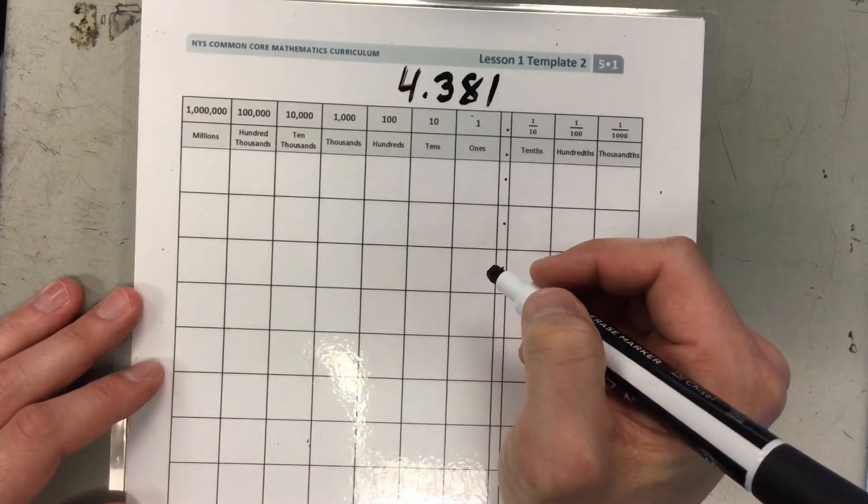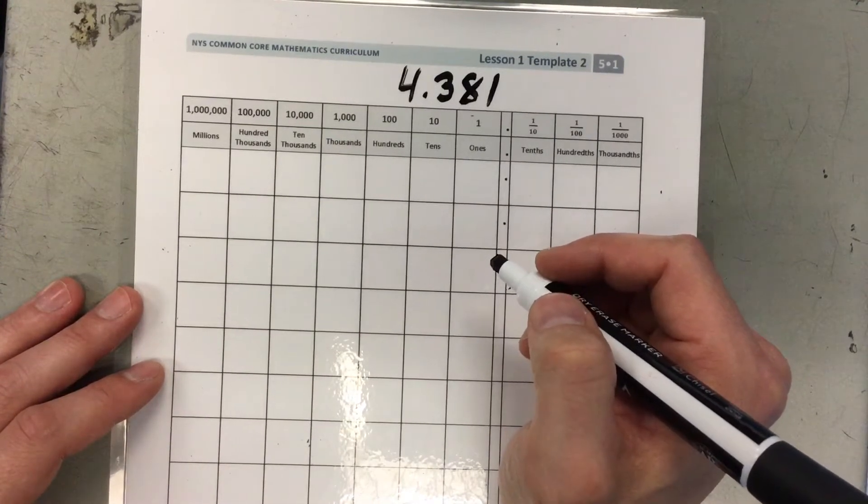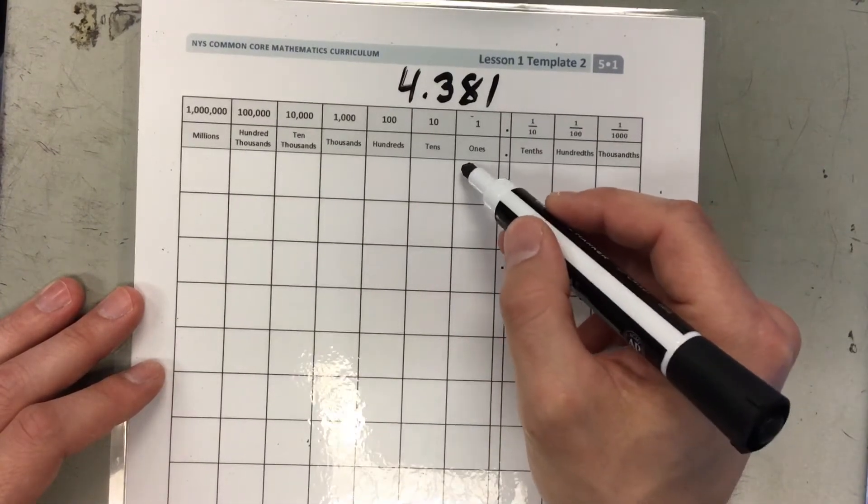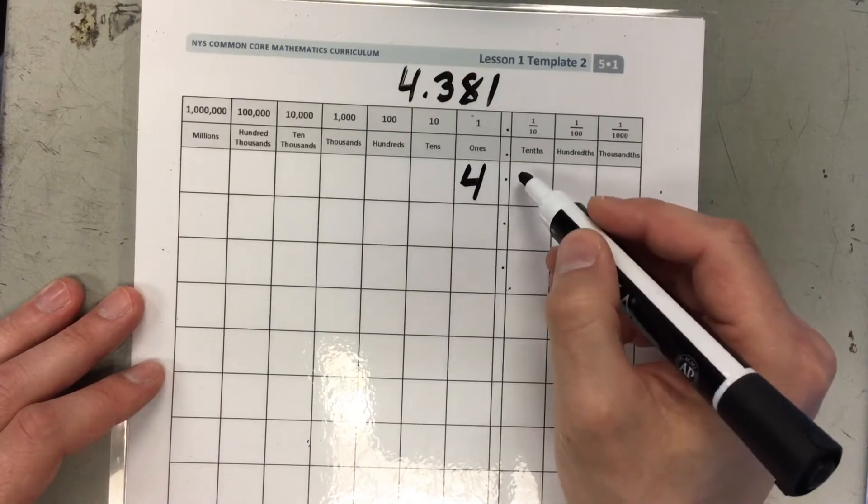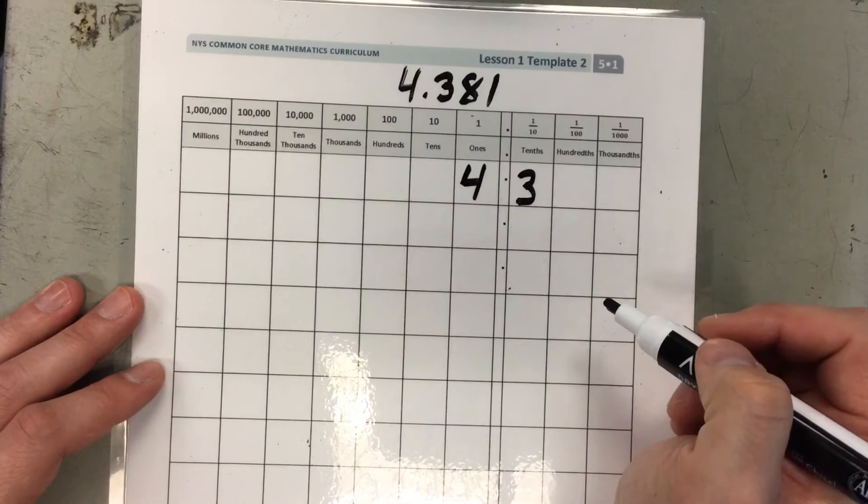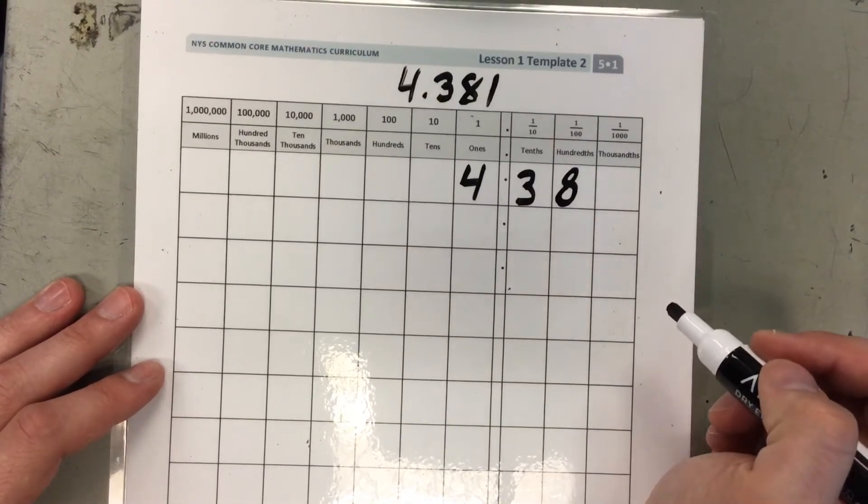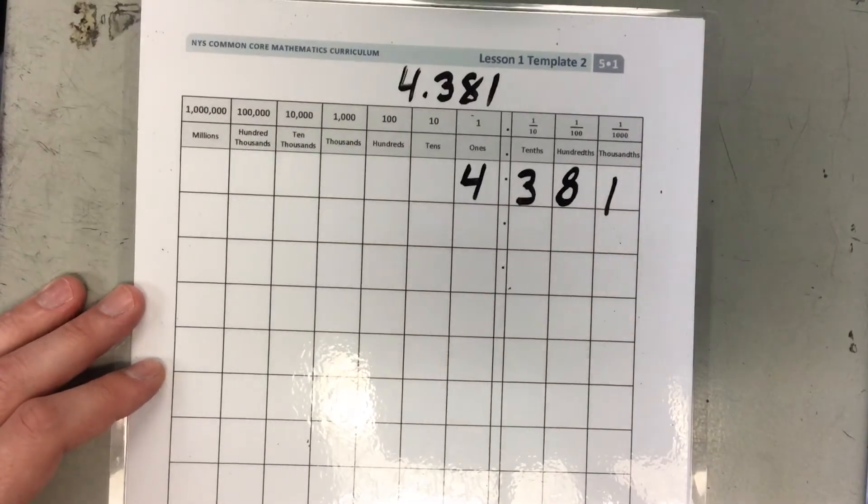Let's put this number into our place value chart and break it down and decompose it. So let's first name it in unit form. How many ones do I have? That's 4 ones. How many tenths? 3 tenths. How many hundredths? 8 hundredths. And how many thousandths? 1 thousandth.